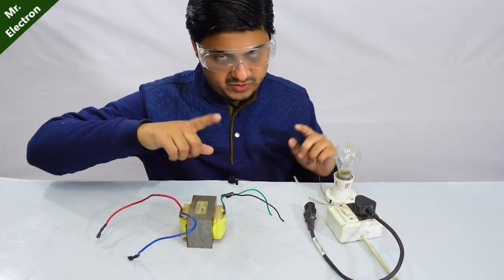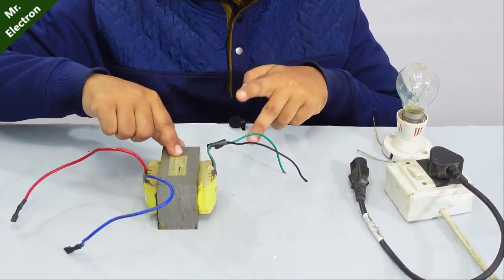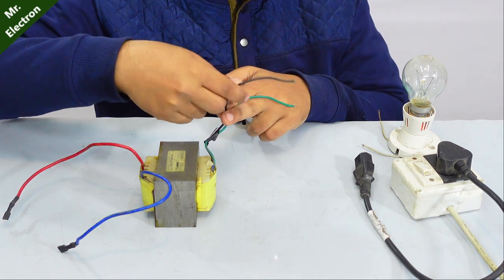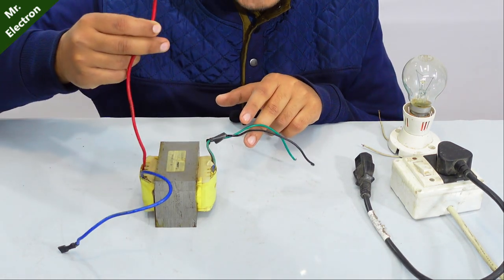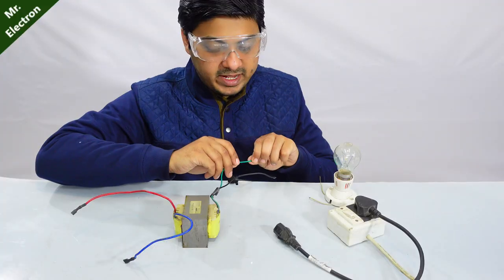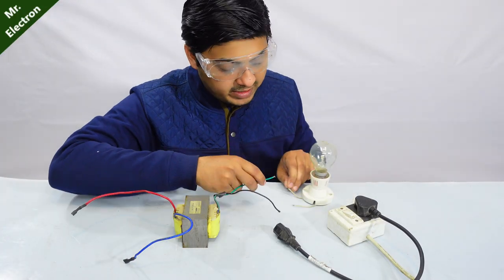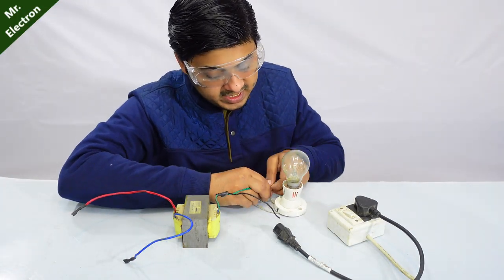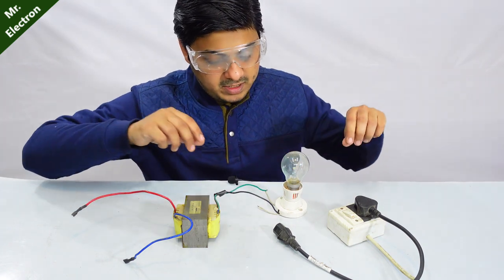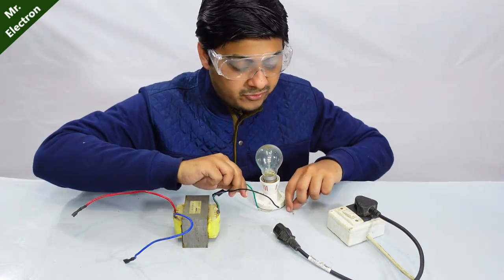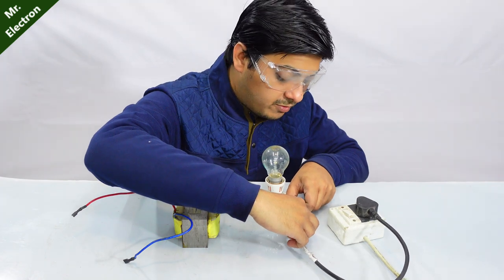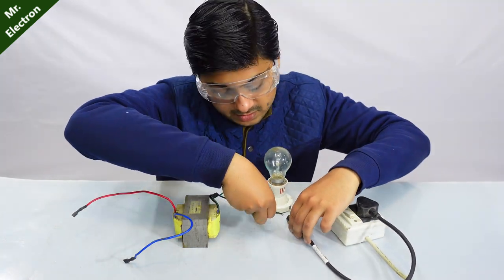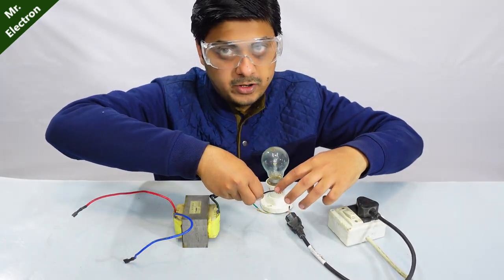This is 220 volts AC supply source with three pins, one for earth. The transformer has high voltage side represented by thin wires and low voltage, high current by thick wires. Take one of the thin wires and connect it to the bulb in series.